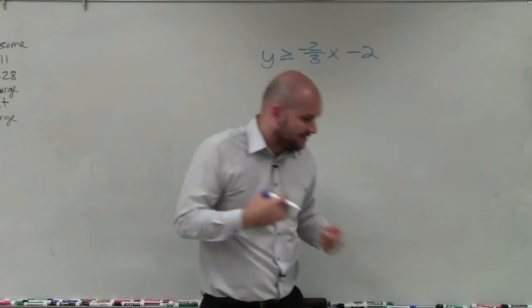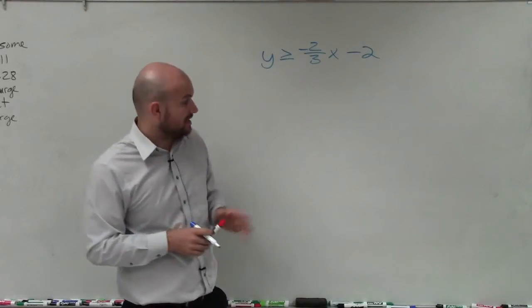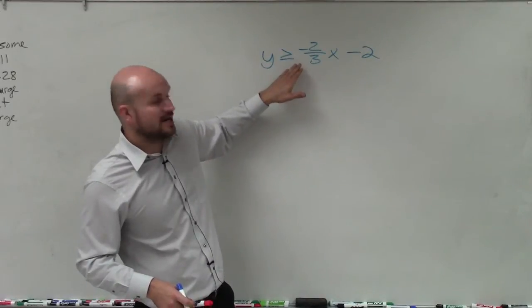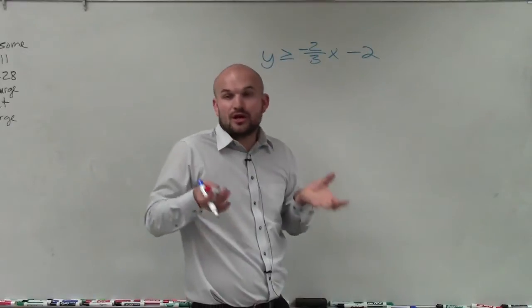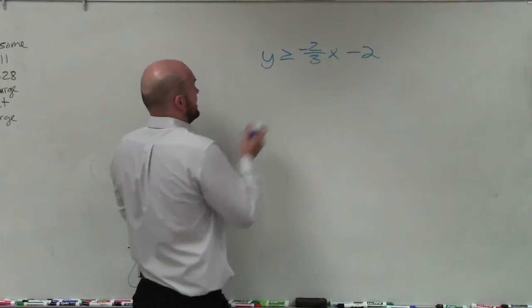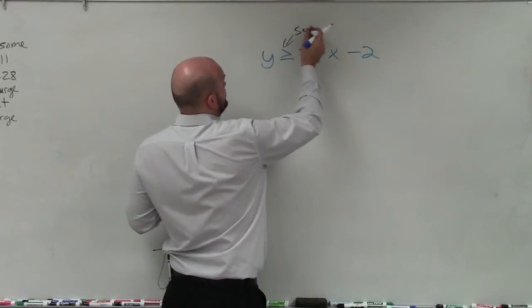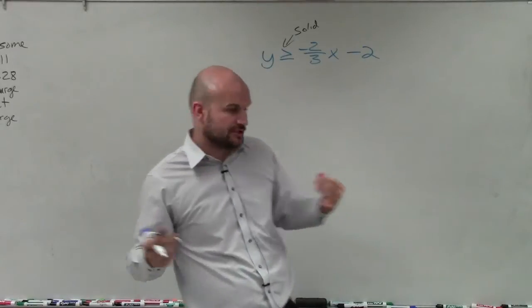I have y is greater than or equal to negative two-thirds x minus 2. When first graphing a linear inequality, the first thing we want to identify is whether we're going to have a dashed or a solid line. Since this inequality symbol is greater than or equal to, that equal to is telling us that those solutions are also going to be equal when they lie on our line. Therefore, this is going to be a solid line that we're going to graph, meaning all the points that are on that line are also going to make the inequality true.